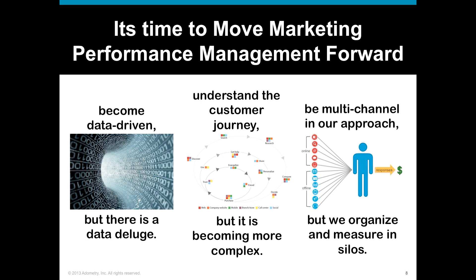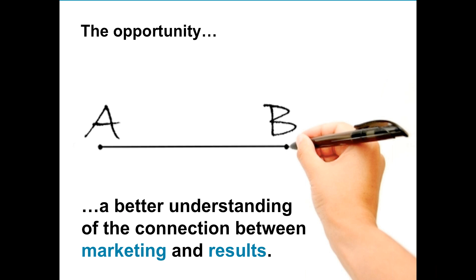Piling on top of that is the adoption of mobile and tablet technology. Not only are consumers using multiple channels, they're using multiple devices on that journey. We'd love to understand what our top converting paths are, how devices play a role, and where the opportunities are — but getting those insights has become a big challenge. The final pressure is really being multi-channel in our approach. We all aspire to it, but many organizations still organize and measure in silos and are not capable of optimizing across all those channels. At the end of the day, the opportunity is pretty simple: how do we create a better understanding of the connection between marketing and results?